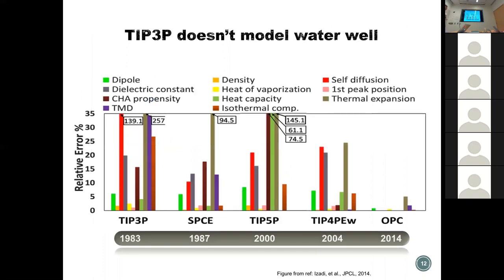This data from the Onufriev group shows the errors for different water models on bulk properties. TIP3P has really large errors for most bulk properties like self-diffusion constant and isothermal compressibility. SPCE, TIP5P, and TIP5P-E are also not very good. TIP4P-EW seems a little better but not great. OPC seems very promising. So we asked: what if we substitute TIP3P with a better water model — would FF14SB give a better helical propensity correlation?